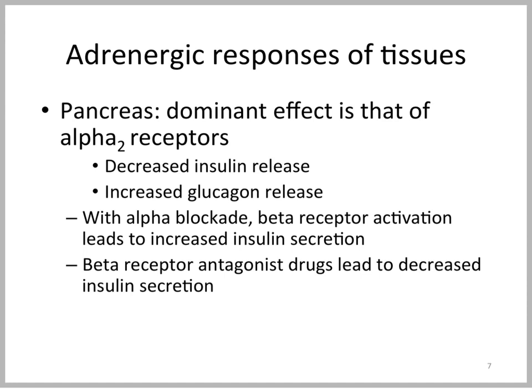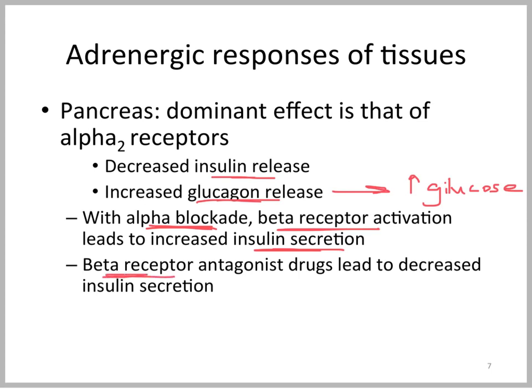What might the adrenal medullary response inhibit? Since the sympathetic nervous system acts counter to the vegetative system such as the digestive system, you'd get inhibition of insulin release — and indeed that happens. Increased glucagon as well, because we want glucagon to help epinephrine increase glucose; they work together as counter-regulatory hormones to insulin. Drugs that block alpha receptors or stimulate beta receptors can lead to increased insulin secretion, while drugs that block beta receptors can lead to decreased insulin secretion.